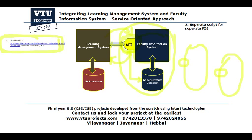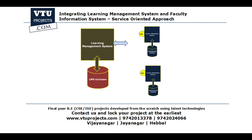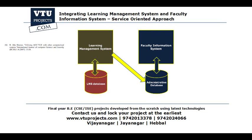The conclusion is that the second existing system solves the first problem but still suffers from the second. If there are 20 or 50 Faculty Information Systems, LMS has to remember each and every API, which is very difficult. Now the third existing system is direct communication — according to that reference, the author proposes that the Learning Management System can directly access the administrative database.